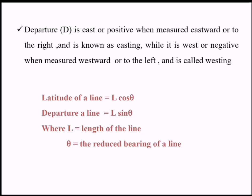Latitude of a line can be calculated using the equation L·cosθ and departure of a line can be calculated using the equation L·sinθ. Here L is the length of the line and θ is the reduced bearing of a line. Reduced bearing means bearing measured from the north, and its value varies from 0 to 90 degrees.